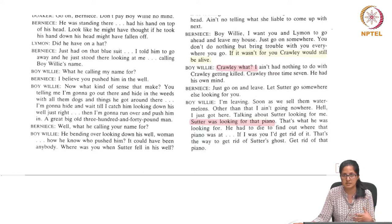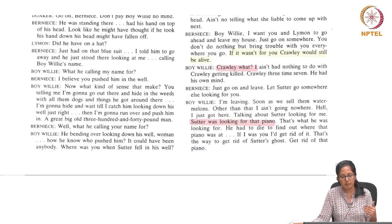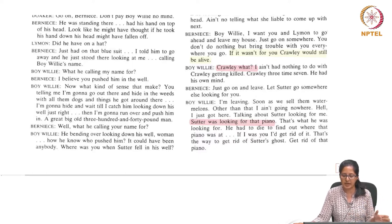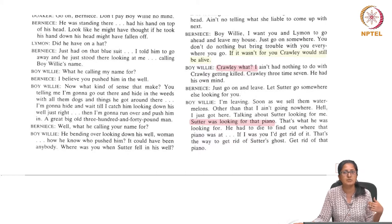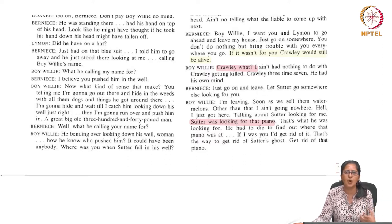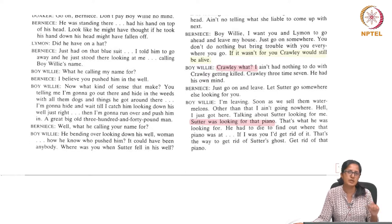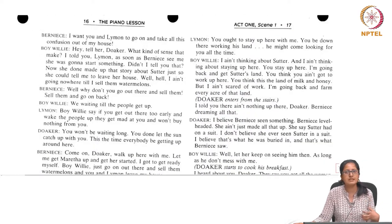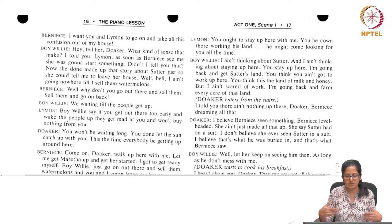Boivoli argues that if Bernice wants to get rid of Sutter's ghost, she needs to sell the piano. There is subtle dark comedy here — Sutter could never find the piano when he was alive, but now as a ghost he has figured it out. Bernice believes Boivoli brought all this confusion into her house and keeps asking them to leave. Both remain stubborn: Bernice refuses to sell the piano while Boivoli claims his equal right to it.